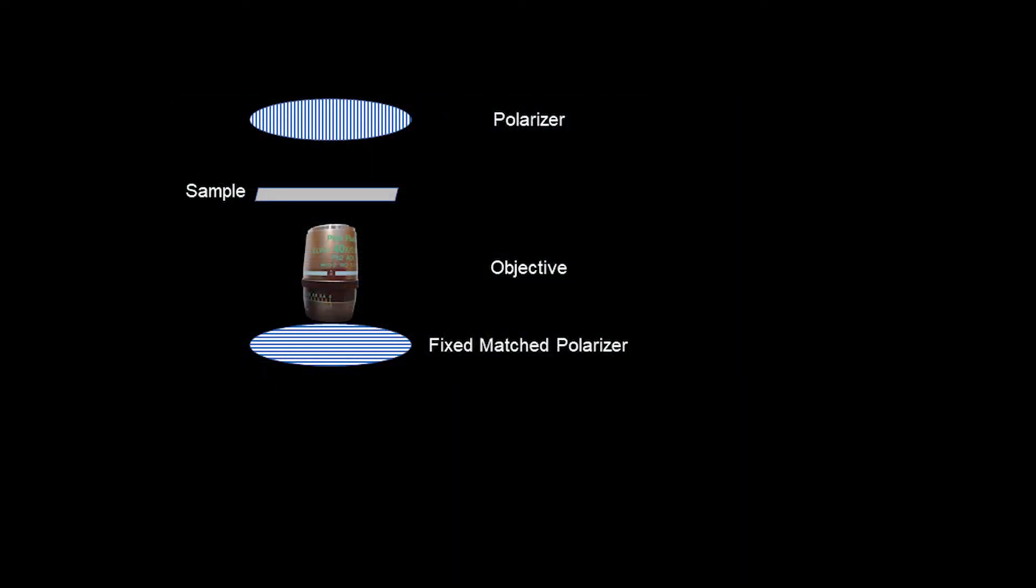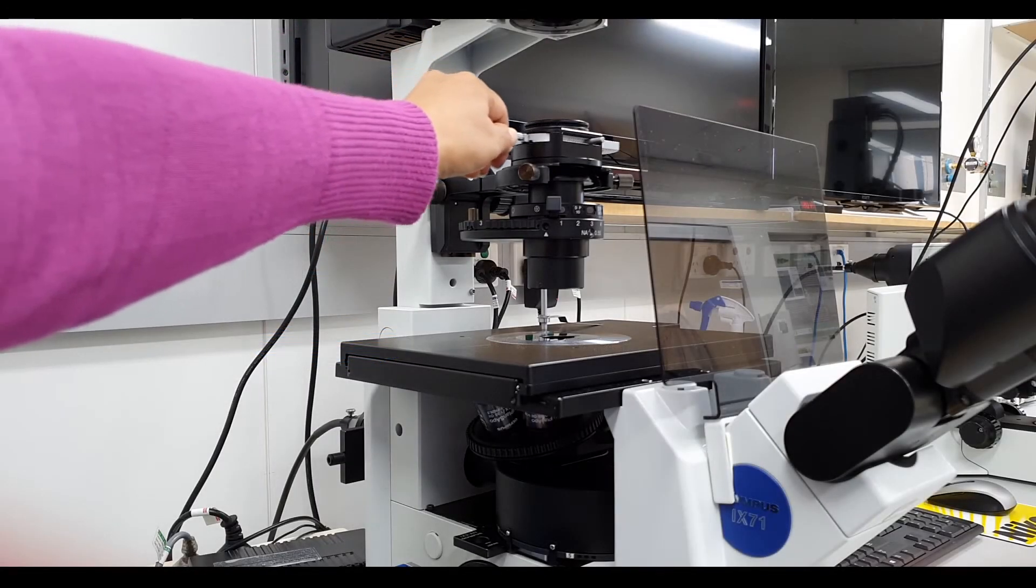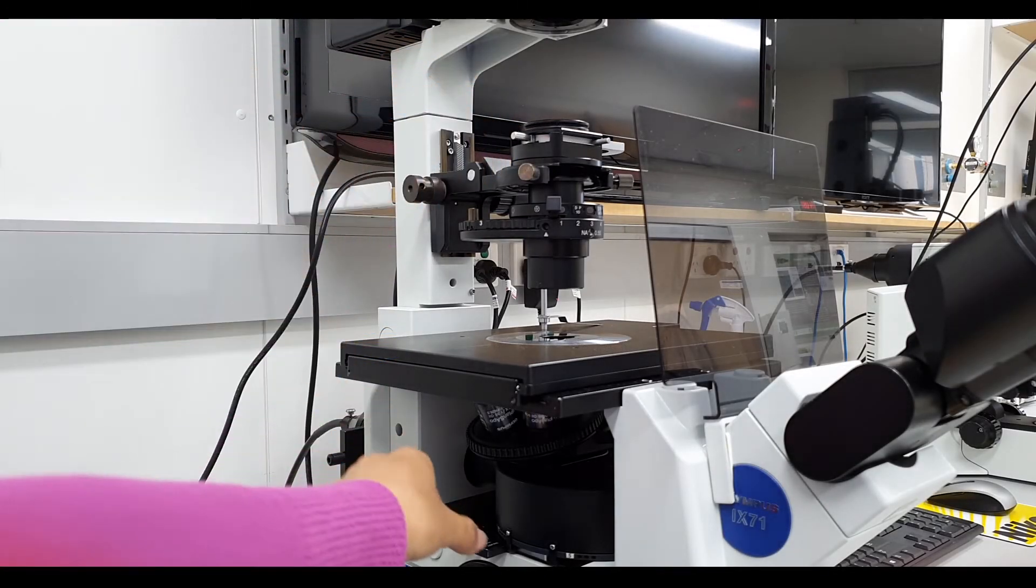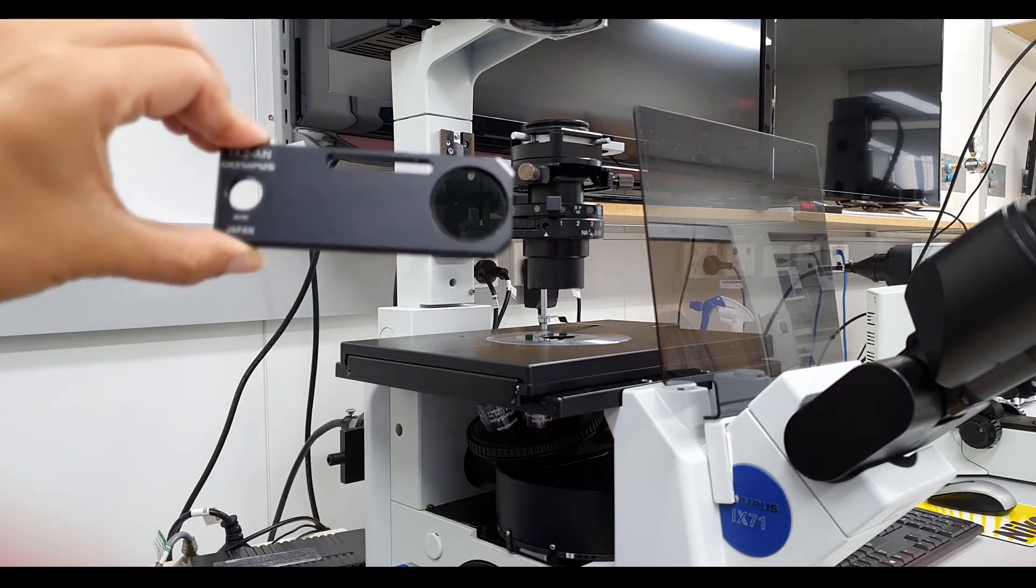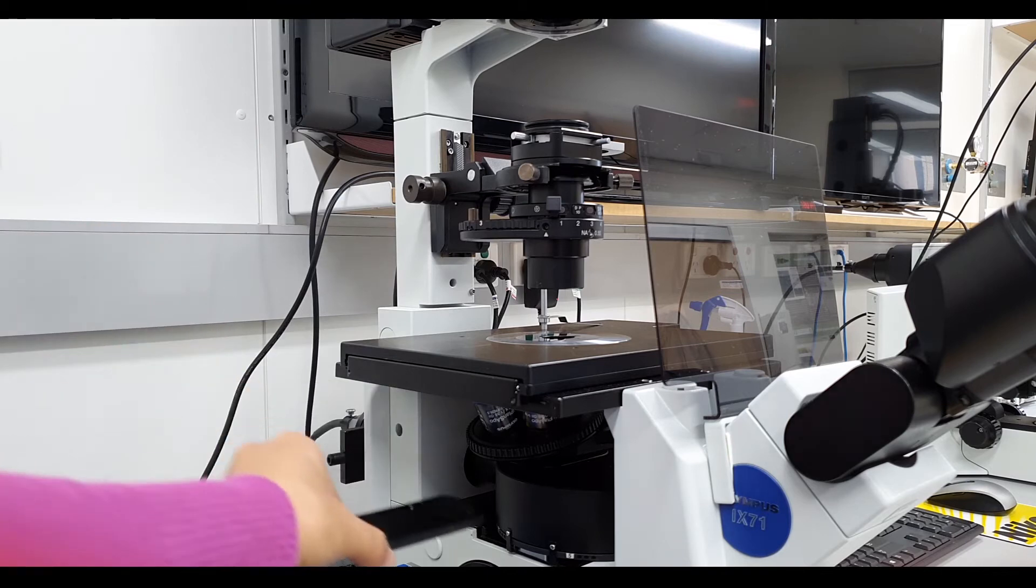The light from the lamp goes through a polarizer and then after the light has transmitted through the sample and objective, it goes through a fixed matching cross polarizer before the light goes to the detector.